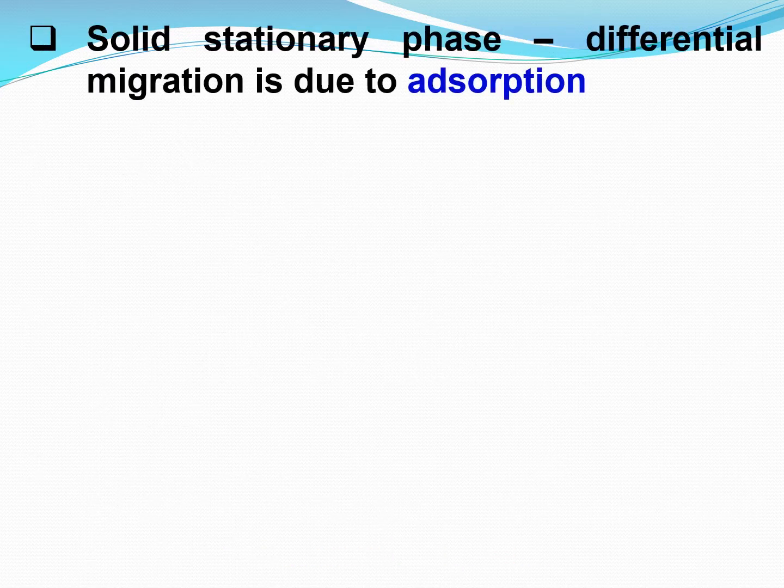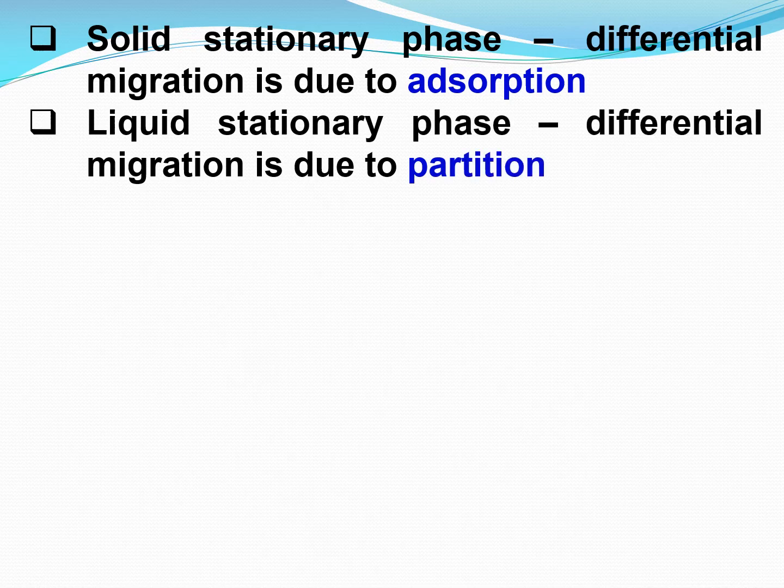If the stationary phase is solid, then differential migration is due to adsorption. The components will be adsorbed on the stationary phase, and when you add the mobile phase, depending on the strength of adsorption, they get separated. Those adsorbed very strongly move slowly, while those adsorbed weakly move fast.